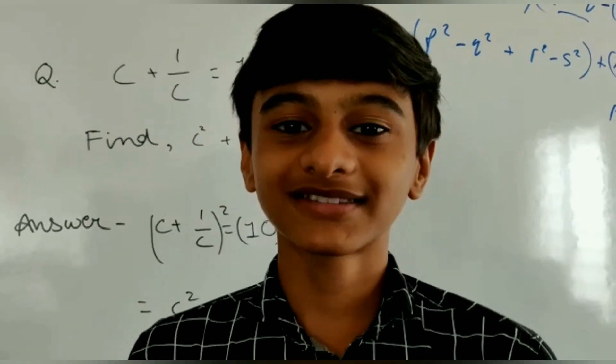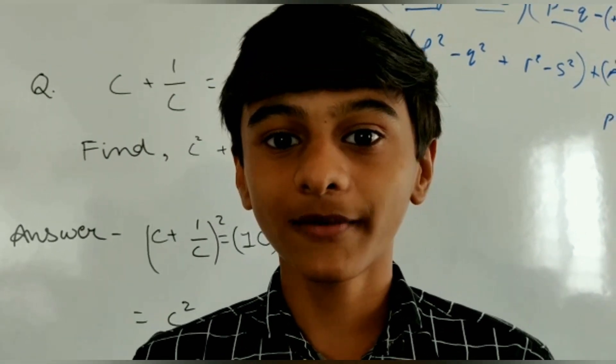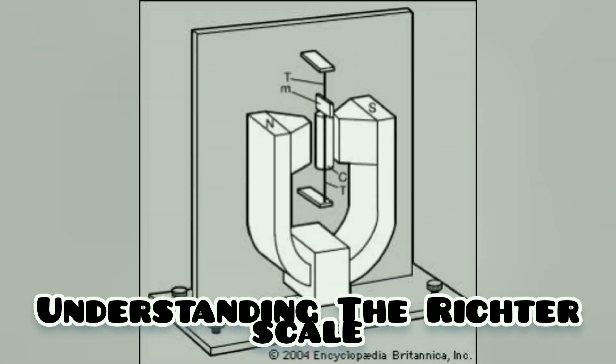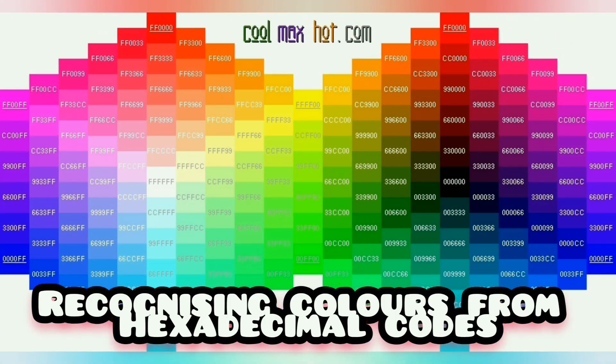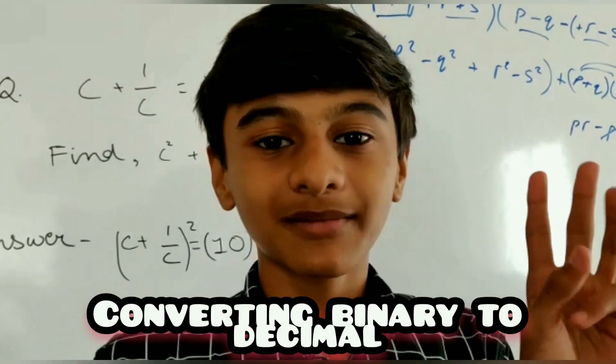Some of the interesting topics that I am trying to cover in the book are understanding the Richter scale, recognizing colors using hexadecimal codes, and converting binary to decimal.